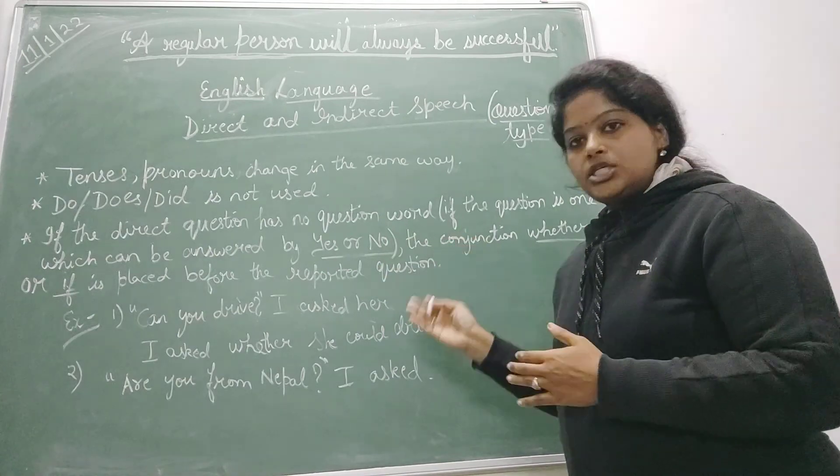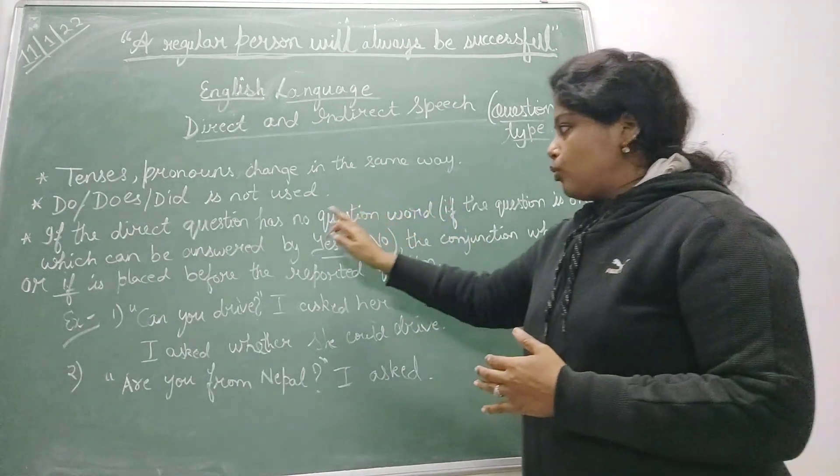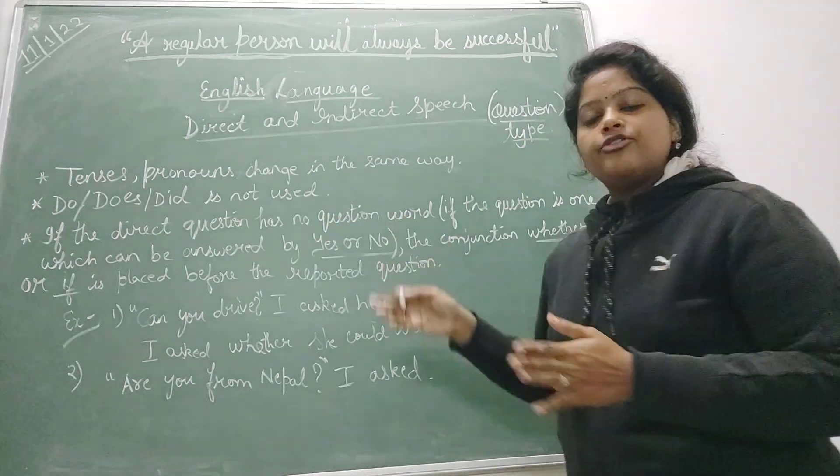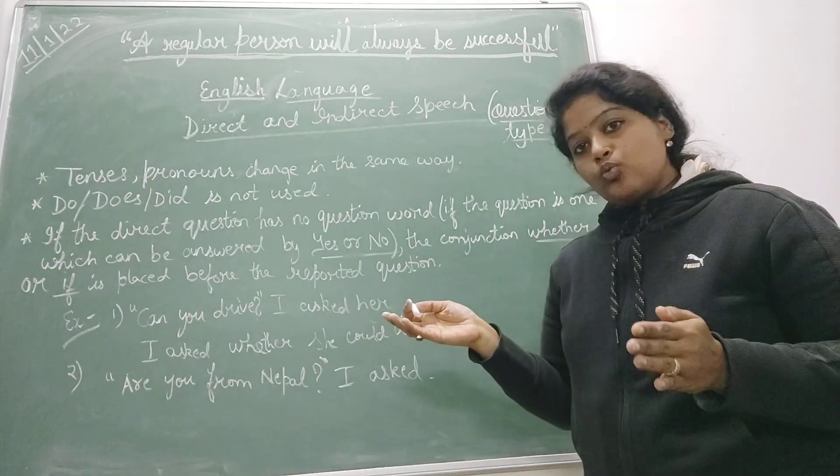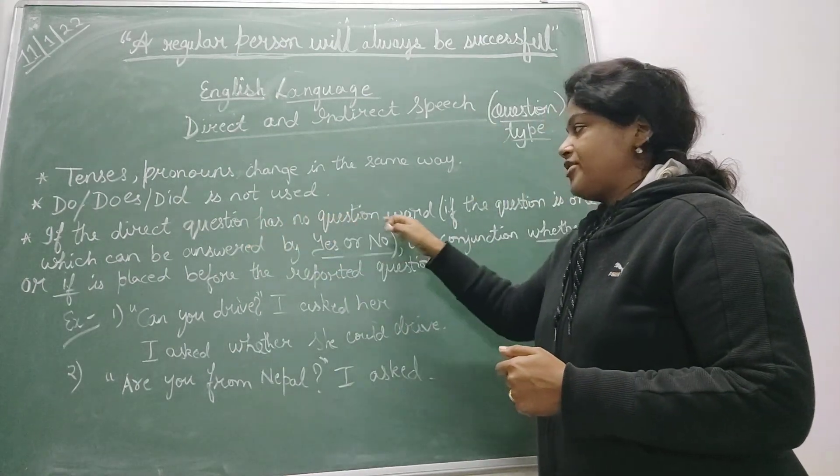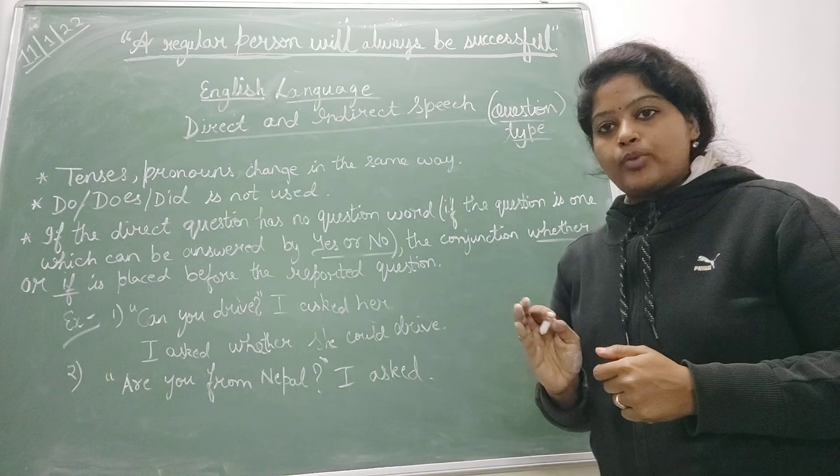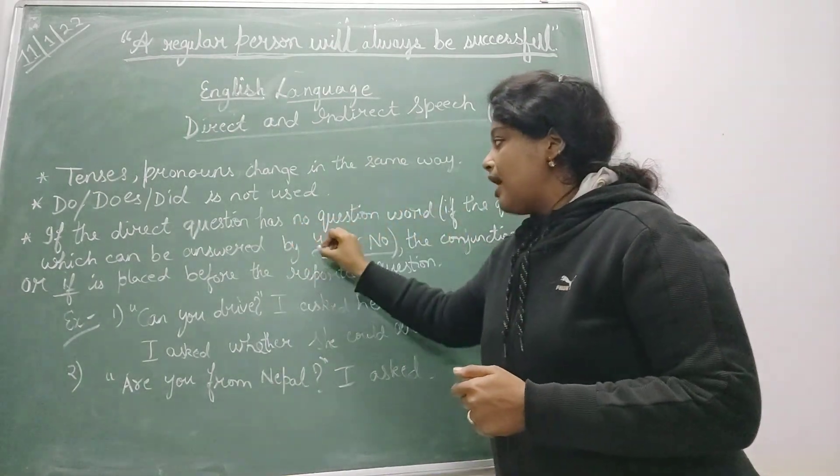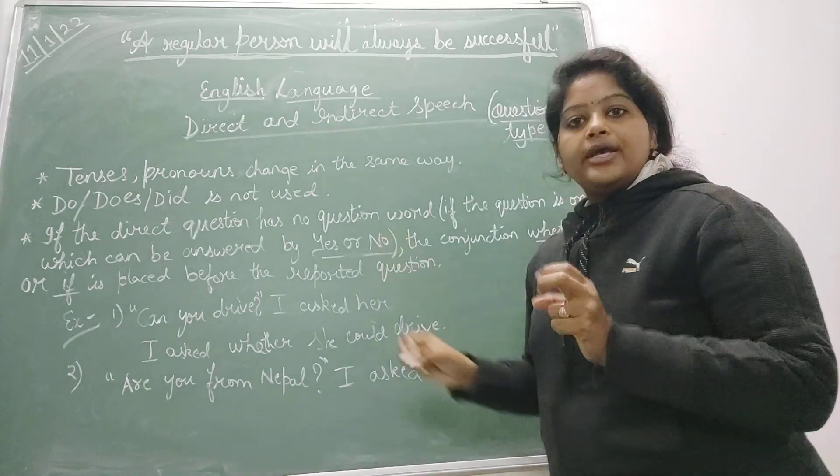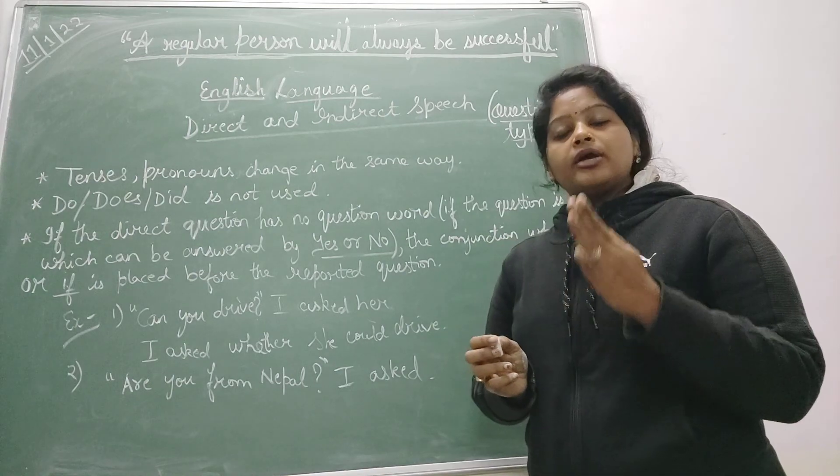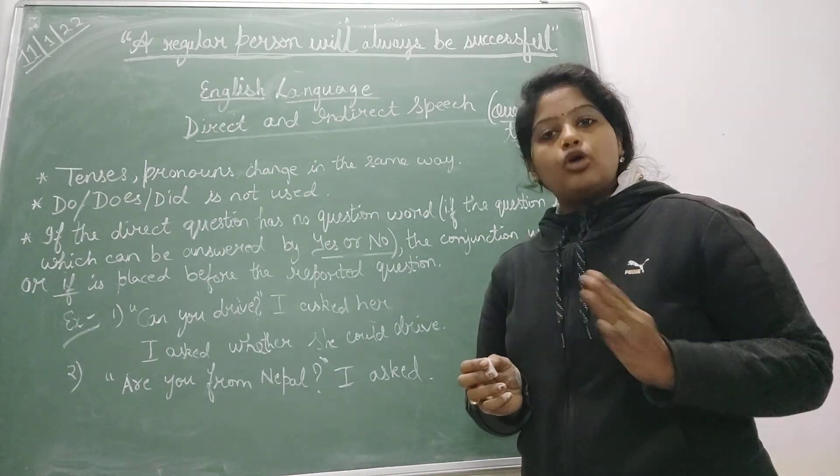But in today's class we are going to discuss one more thing - that in direct question if there is no question word. Yesterday we discussed if a question has a question word, but suppose if a direct question doesn't have a question word, what will you do in that situation. So if the question is one which can be answered by yes or no, the second category can be if a direct question doesn't have a question word.